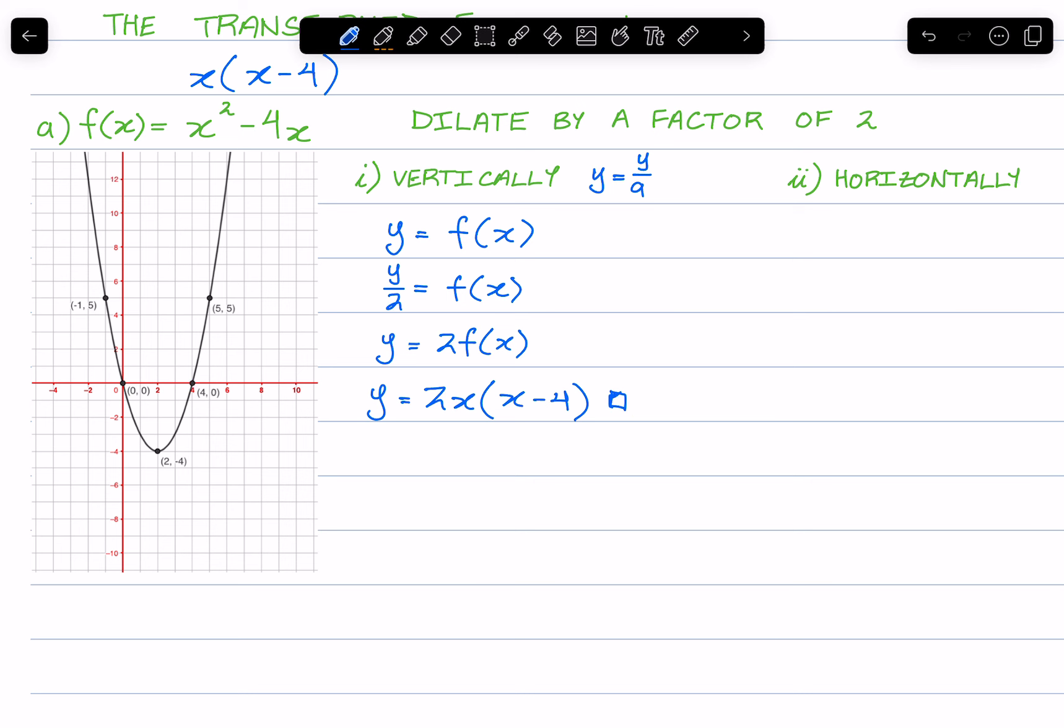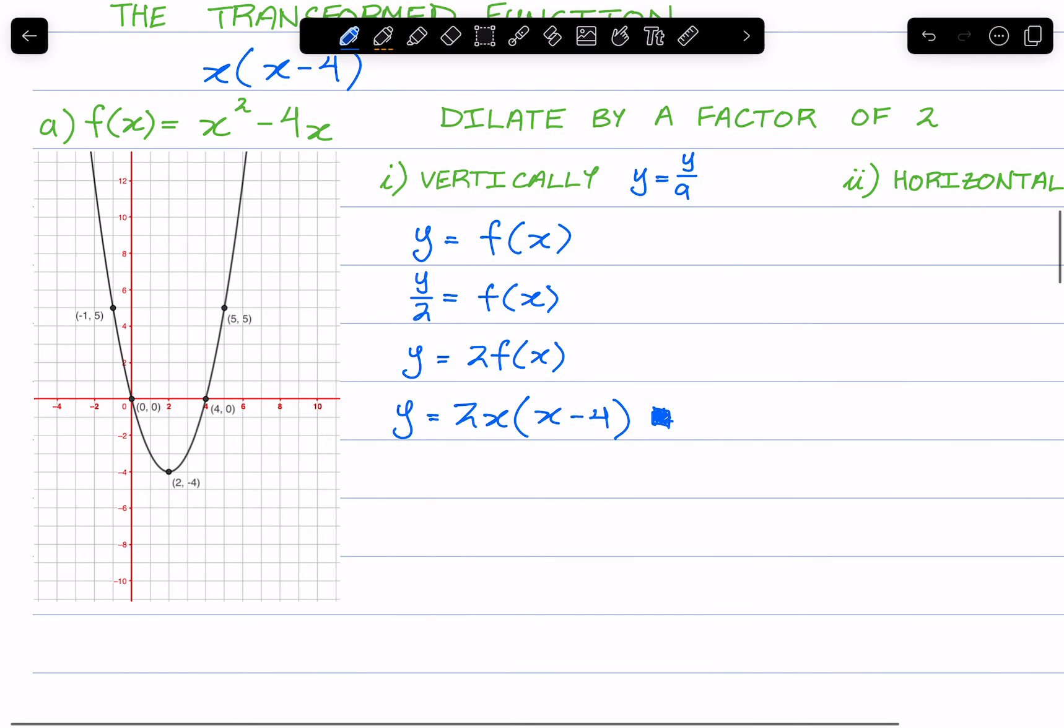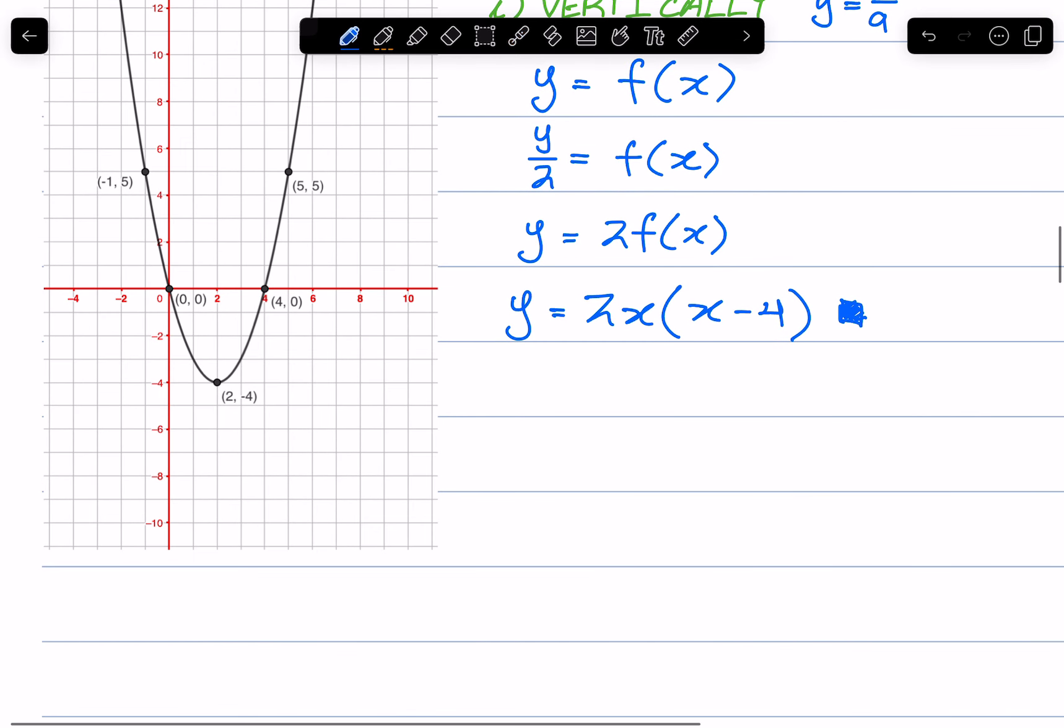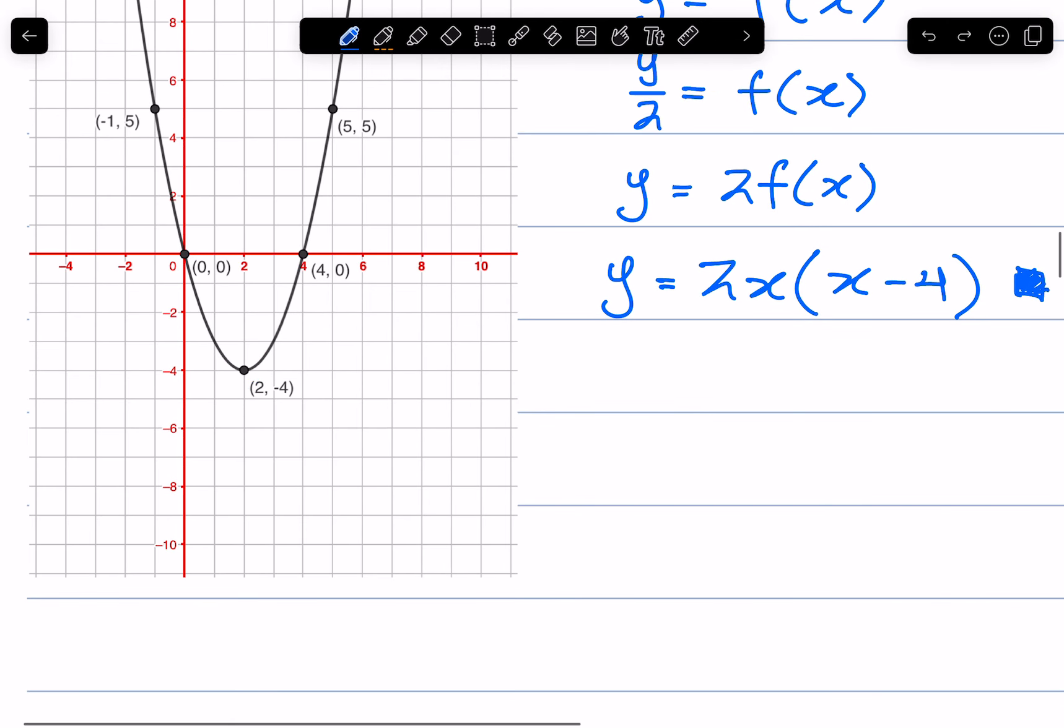Let's do this one in blue. Now remember, the distances vertically are now going to be doubled. So this point is currently a distance of 4.